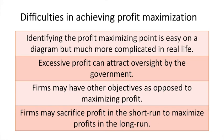Secondly, high levels of profit in some industries can attract government regulation and oversight. Firms may be more likely to pursue other objectives as opposed to solely focusing on maximizing profit. These might include a short run sacrifice of profit in order to maximize profits in the long run. In the coming videos we'll take a look at some of these alternative objectives and the reasons why firms would pursue them.